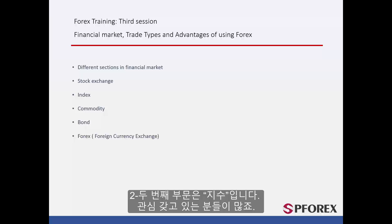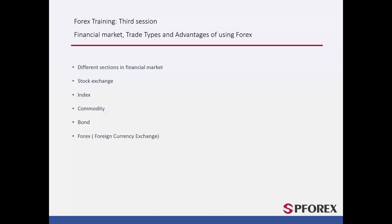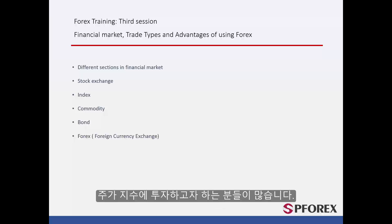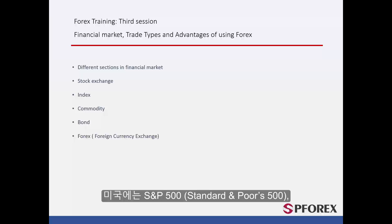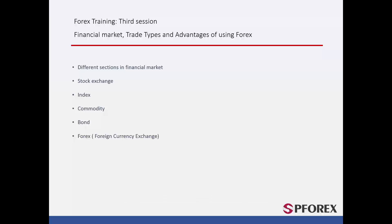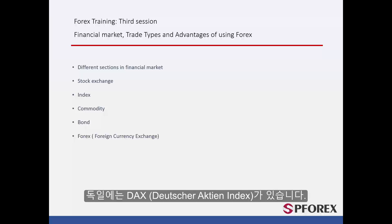The second section, which most people show interest in, is called an index. This is where, instead of buying a single share of a company, many people intend to buy an index of that share. These can be traded internationally. In America, these are known as S&P 500 or the Standard & Poor's 500, and in Germany they are known as DAX.